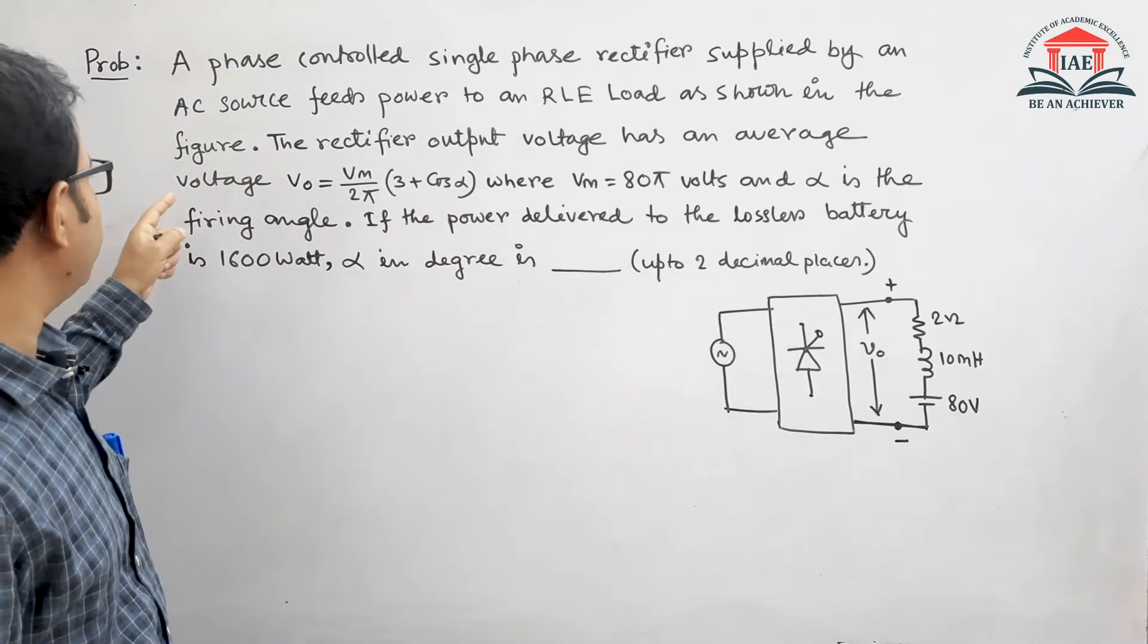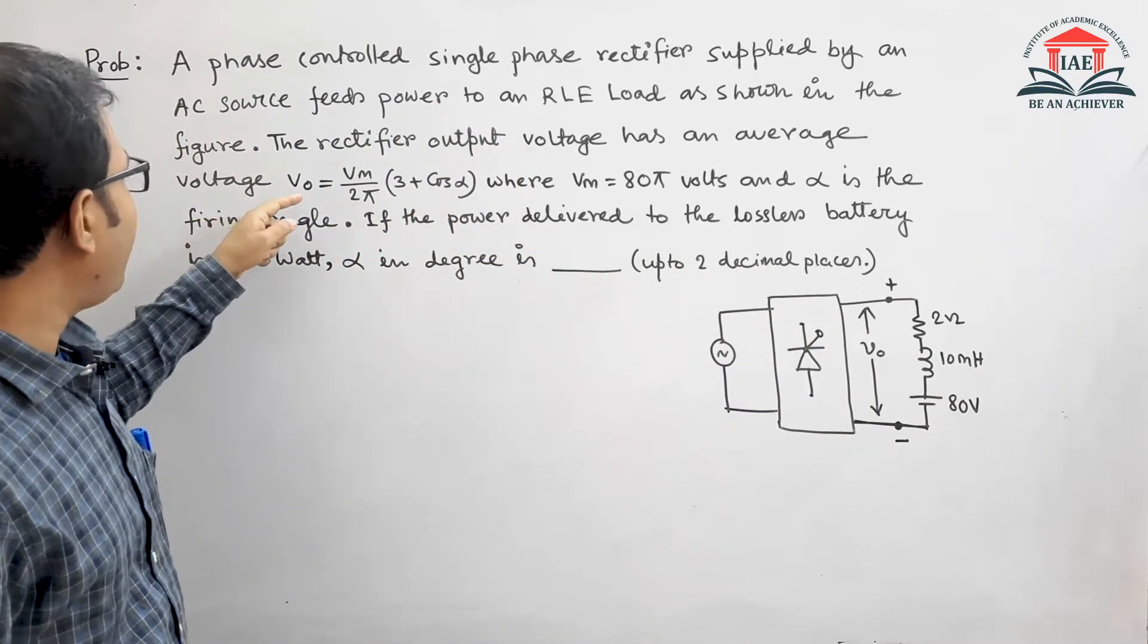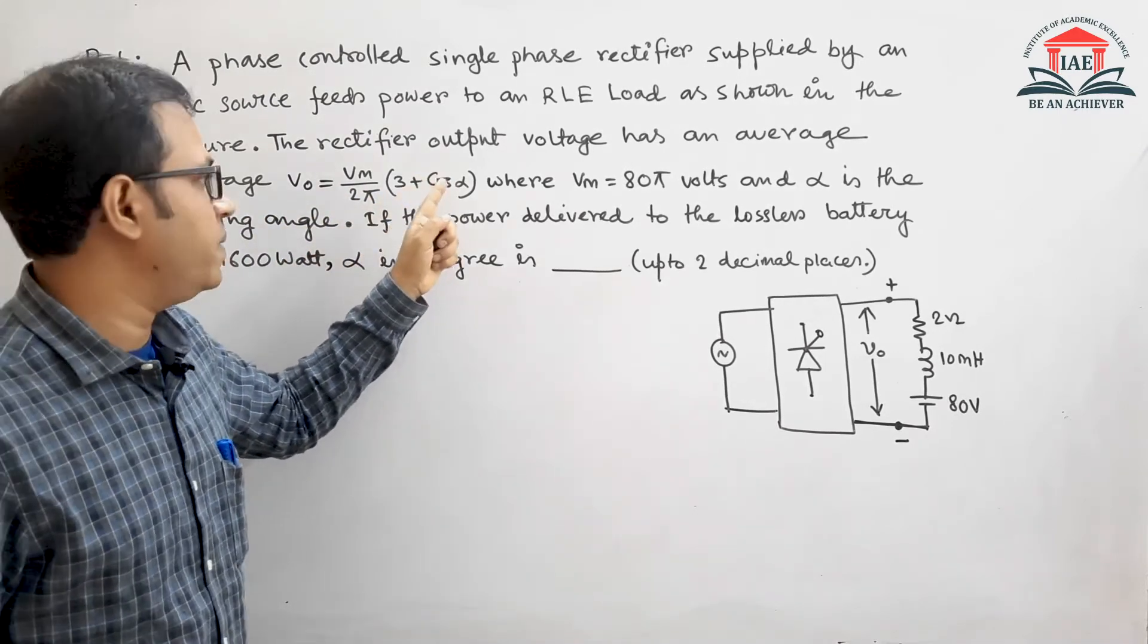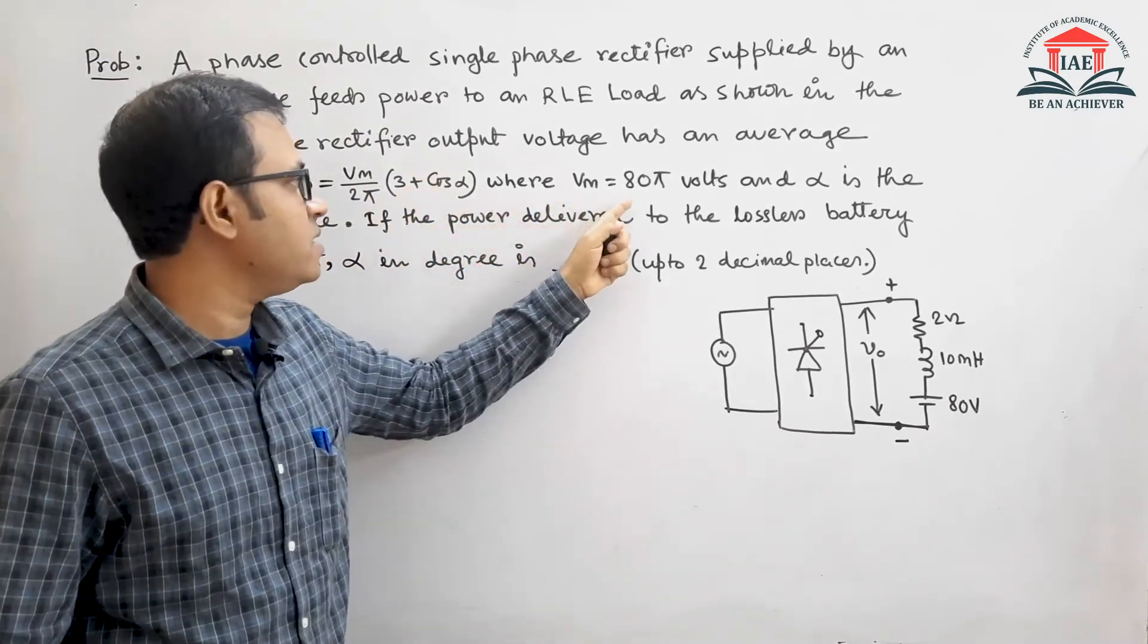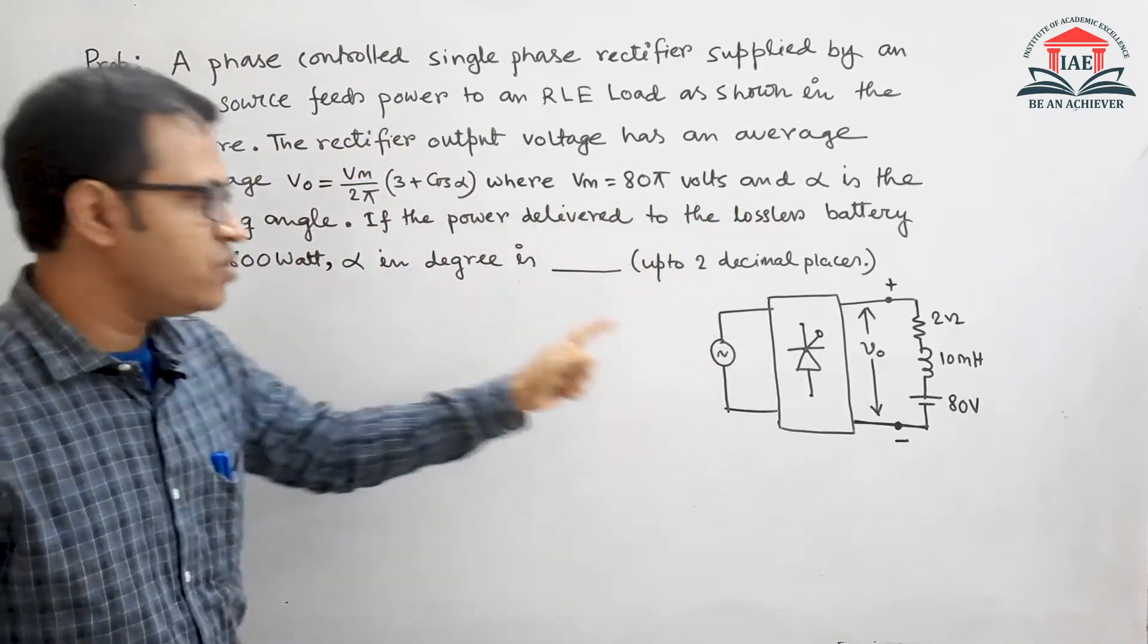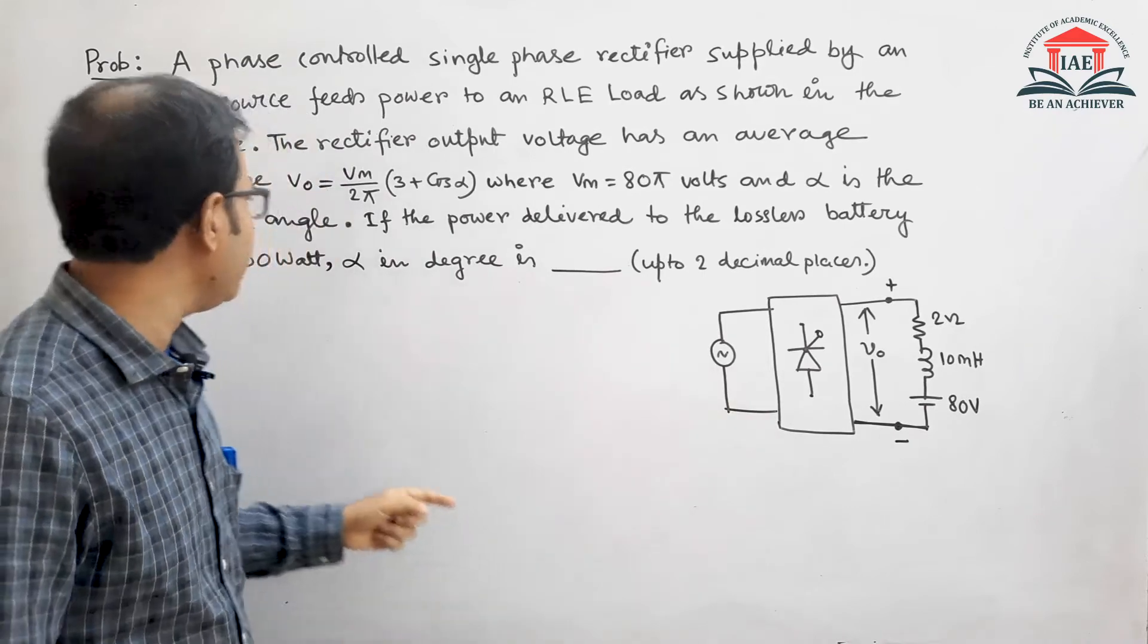Let us see what is stated in the problem. The output voltage V0 equals Vm by 2π times (3 plus cos α), where Vm is given as 80π volts and α is the firing angle.